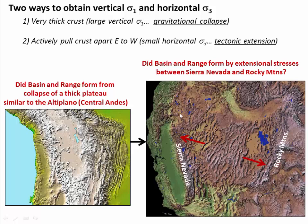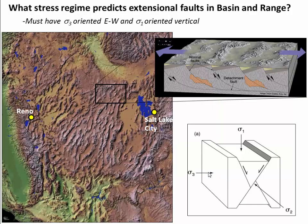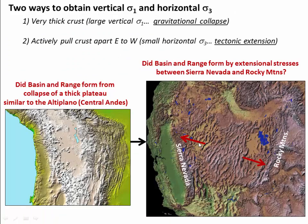Another way to get a vertical sigma 1 and horizontal sigma 3 is not by making sigma 1 really big, but by making sigma 3 really small. You can do this by pulling the block in the other direction, counteracting sigma 3. The other option is that there's actually some pulling going on — perhaps the Sierra Nevada block is pulling away from the Rocky Mountains, counteracting the lateral sigma 3 and creating a very weak lateral sigma 3, allowing for extensional faulting in the Basin and Range. Either way, we've shown how fault geometries can be used to understand the state of stress and think about tectonics.